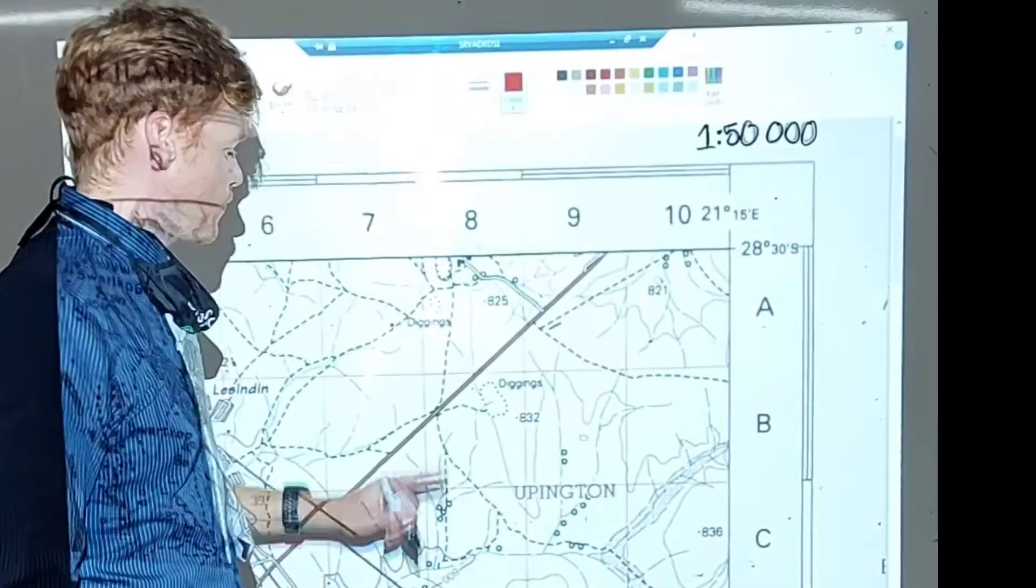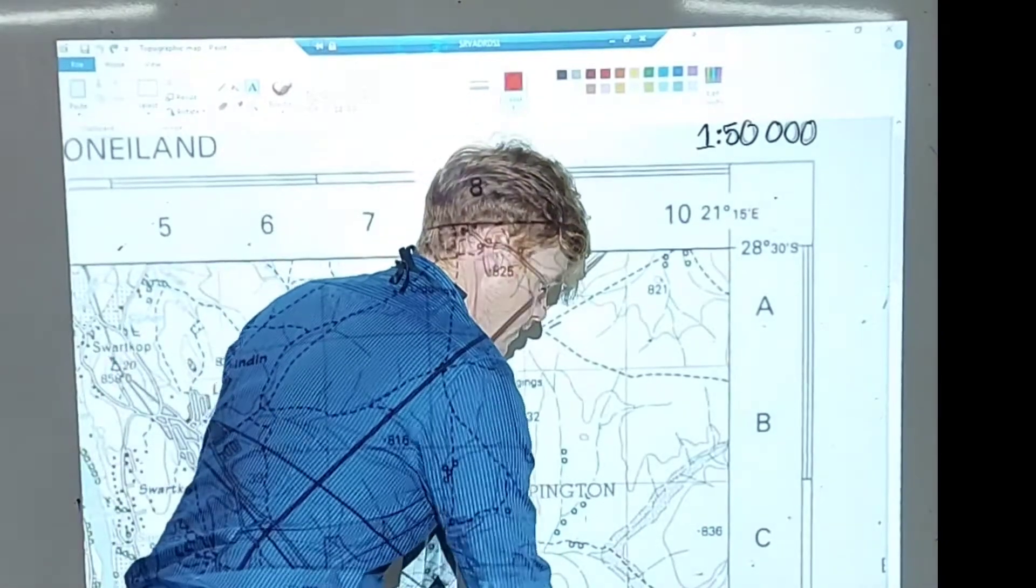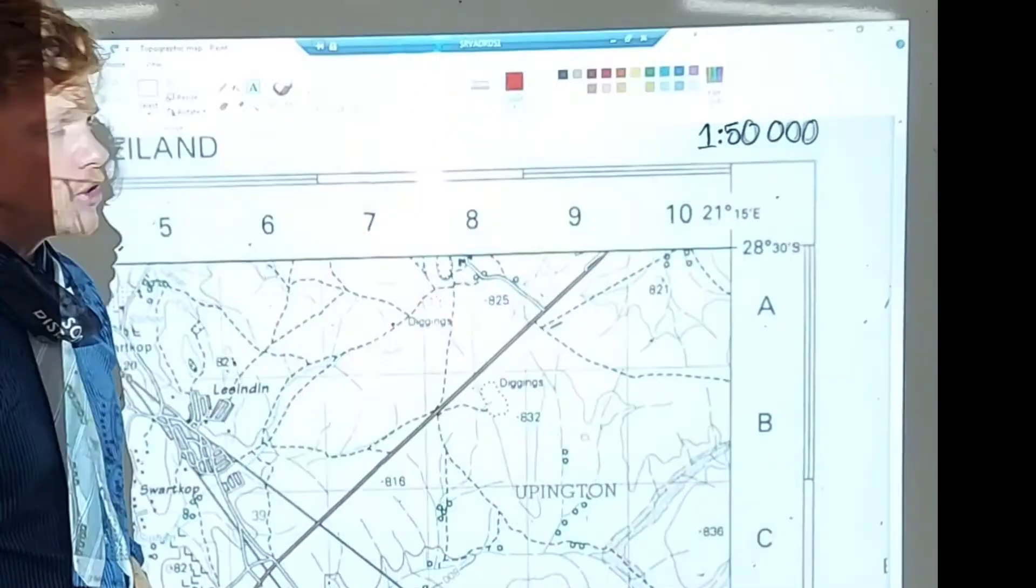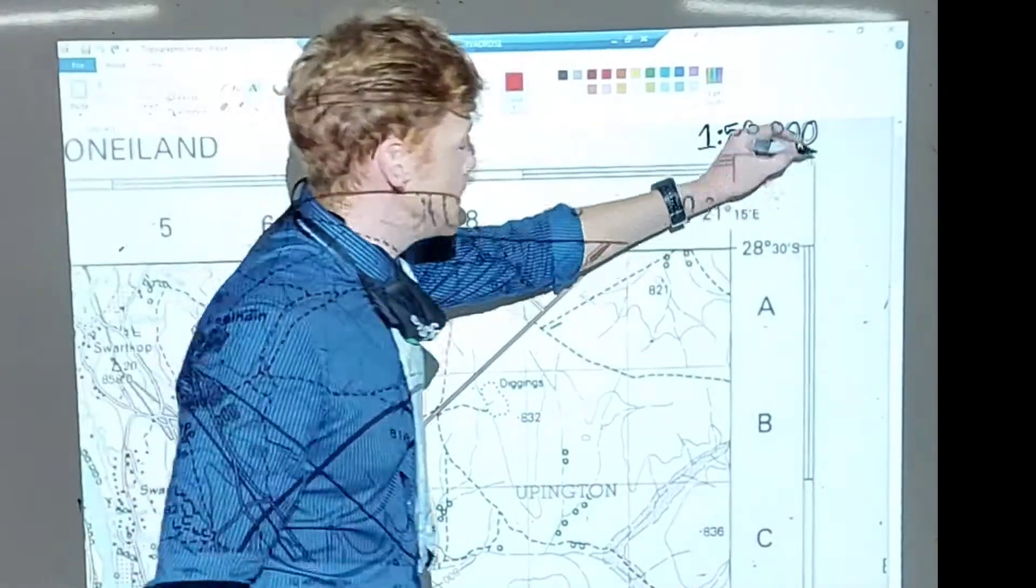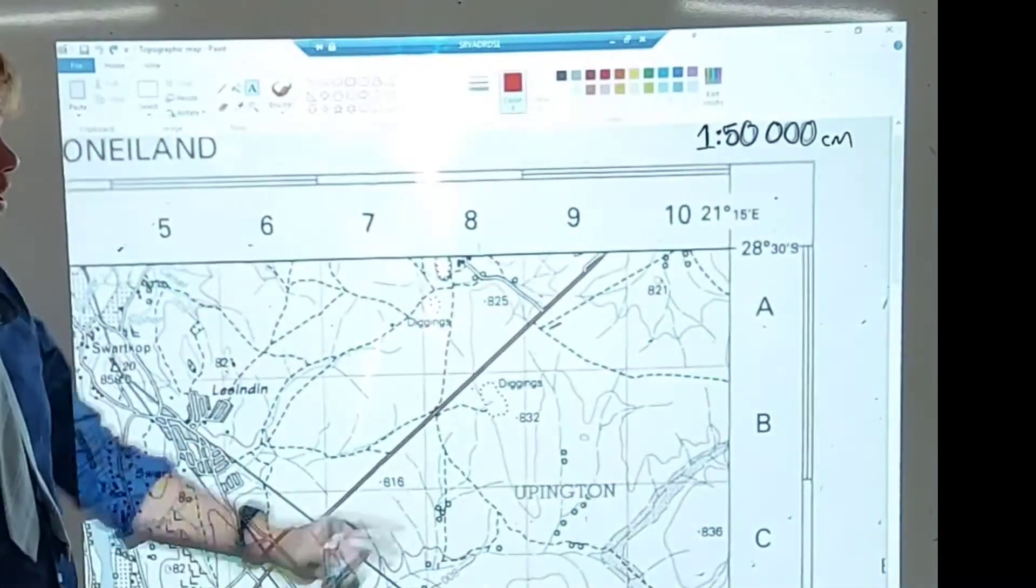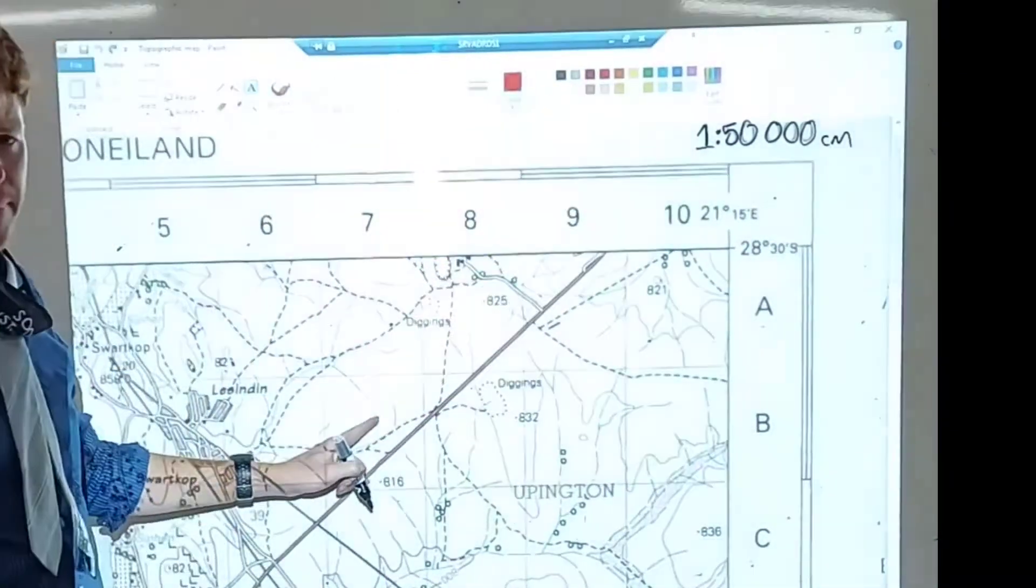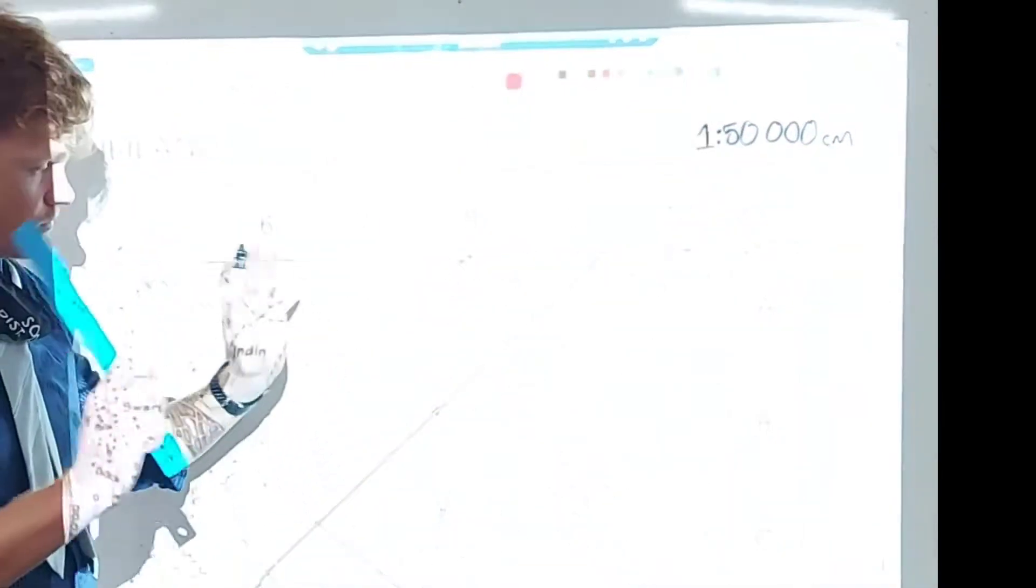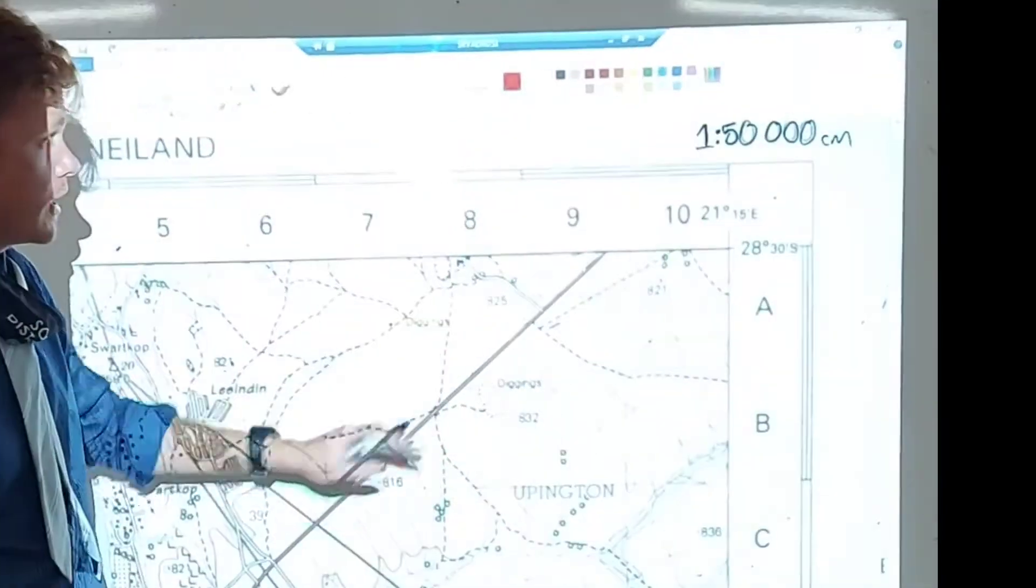So what does this number represent? It represents the following: that for every centimeter that you measure on this topographic map, equals to 50,000 centimeters in reality. So 1 centimeter on the map equals to 50,000 centimeters in reality, where you will find this area.